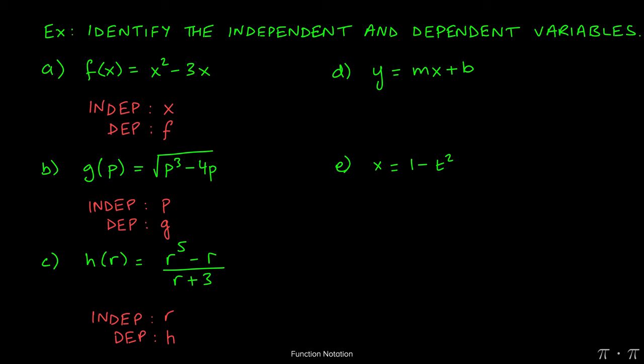Part d is our familiar slope-intercept form. And here, hopefully, it's obvious that the independent variable is x, the dependent variable is y, where m represents the slope and b represents the y-intercept.